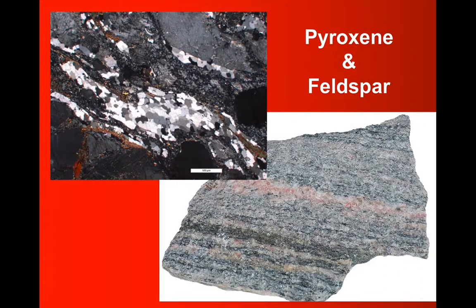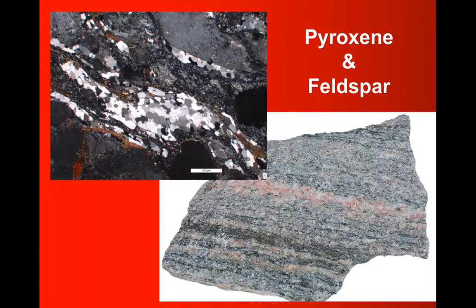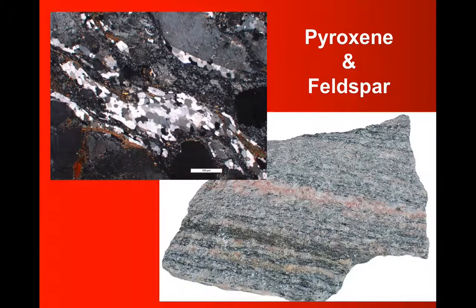Now pyroxene and feldspar aren't characteristic of metamorphic rocks. They're the type of minerals we can find for example in igneous rocks. In fact, the mineralogy of this rock, this is a sample of gneiss, is very similar to say a granite. We see quartz, we see pyroxene, we see plagioclase, orthoclase, feldspar in there.